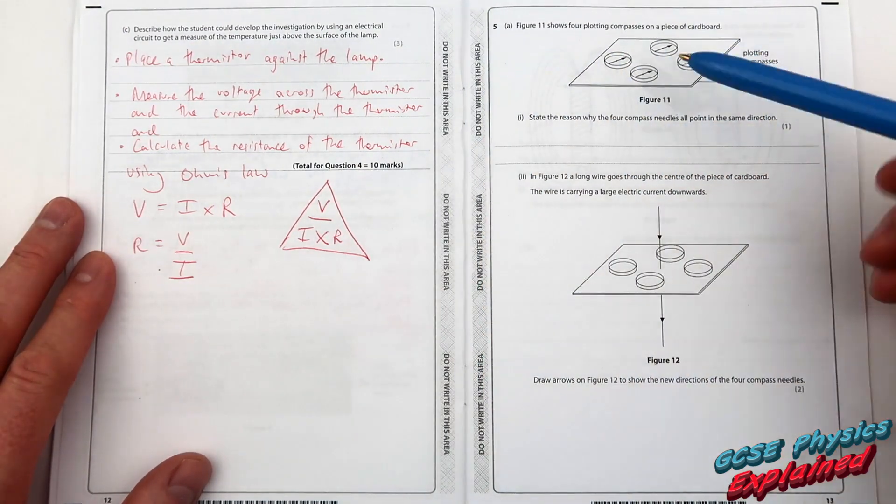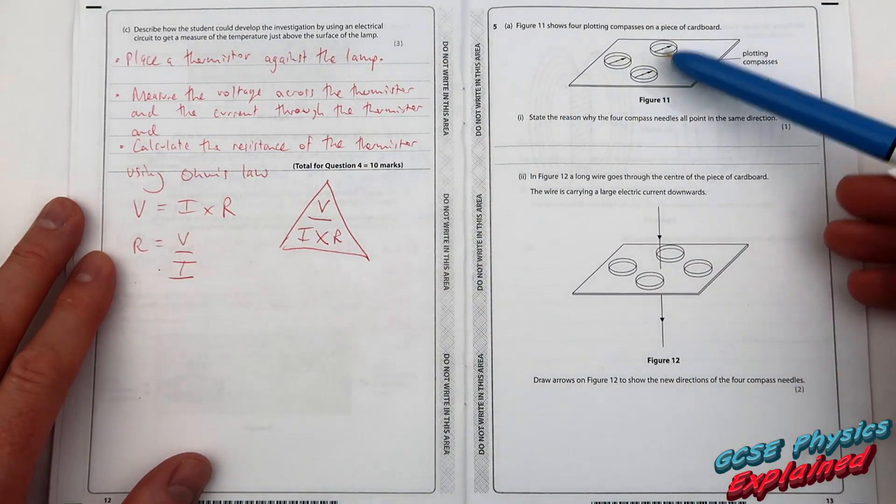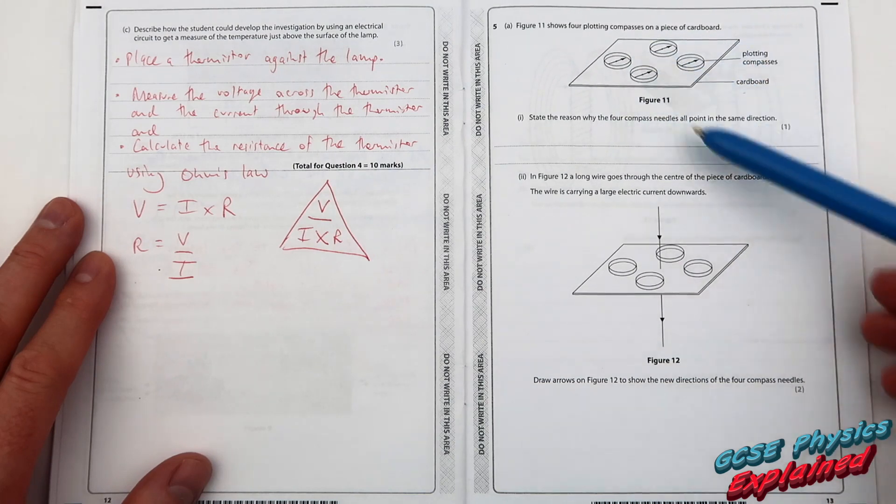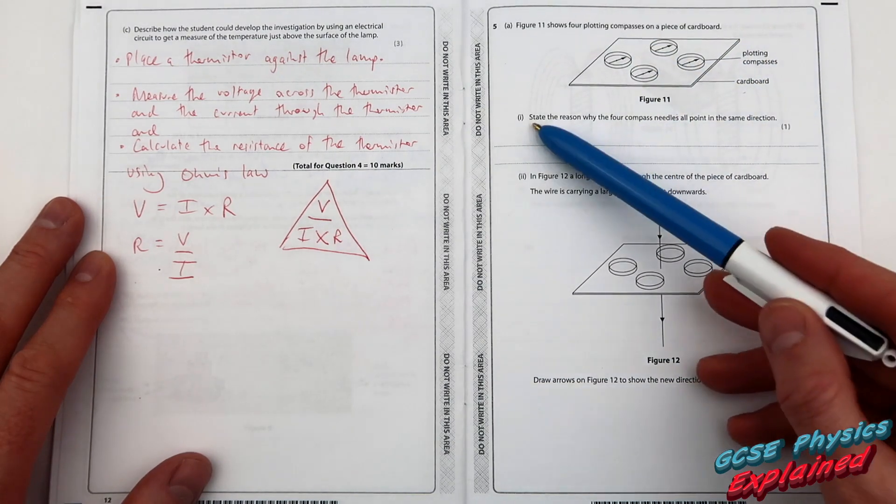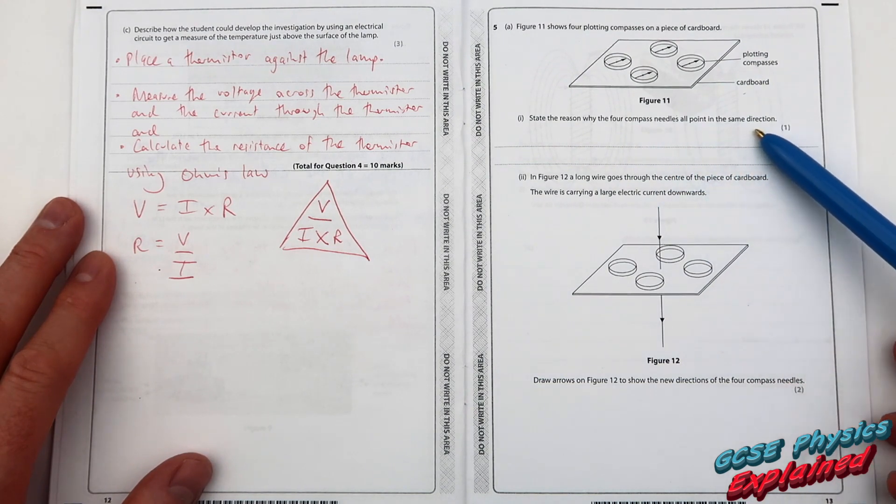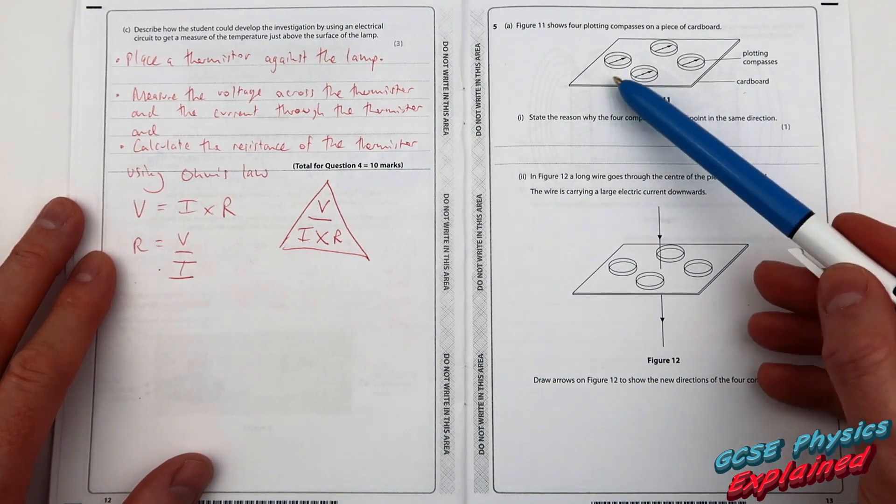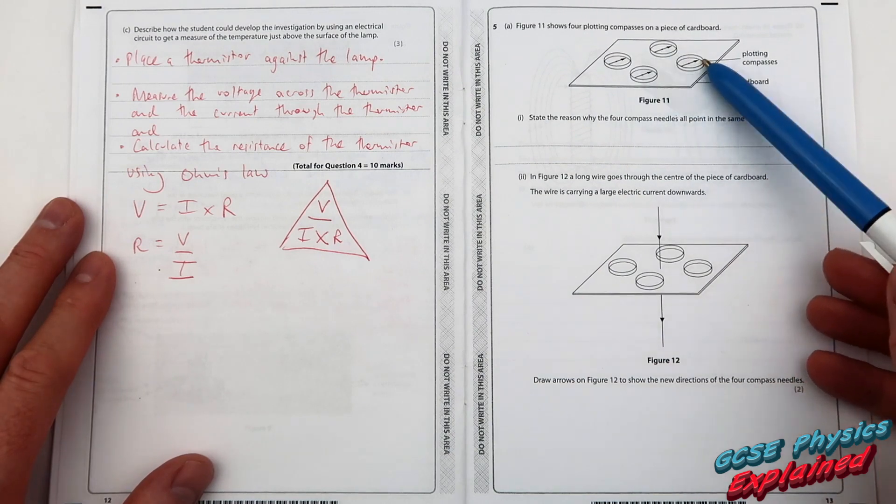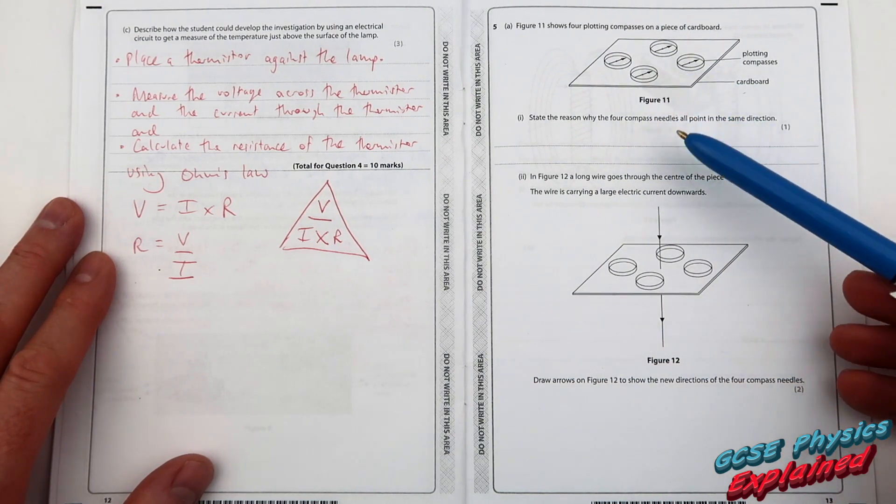Number five. Figure 11 shows four plotting compasses on a piece of cardboard. State the reason why the four compass needles all point in the same direction. Well, that's because they'll be aligning themselves with the Earth's magnetic field.